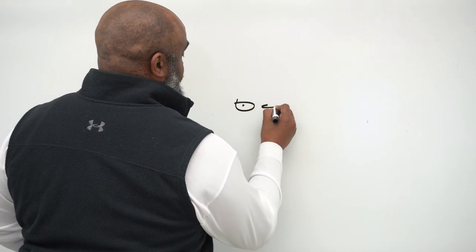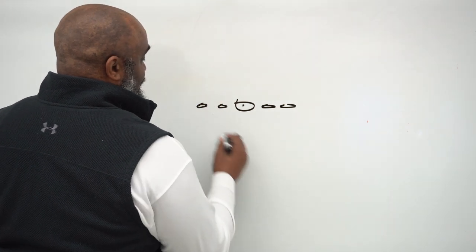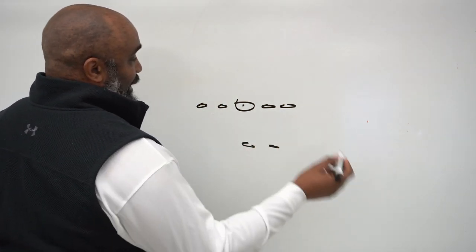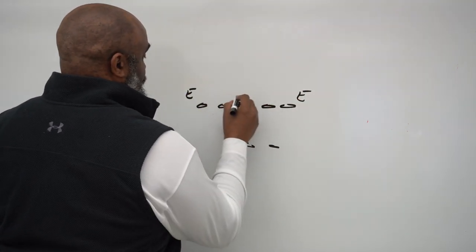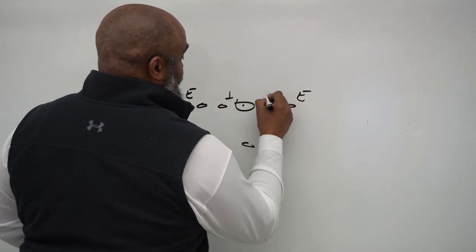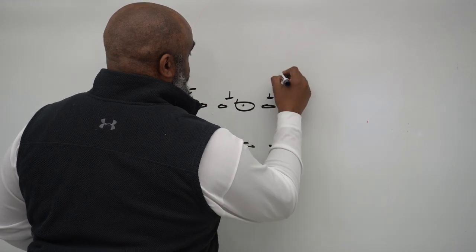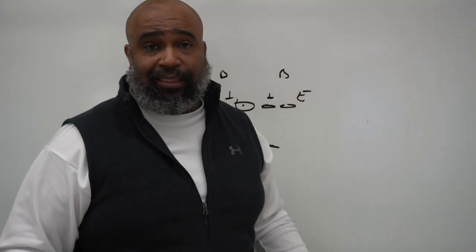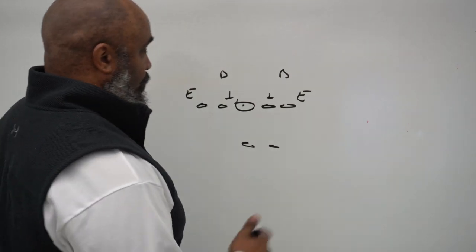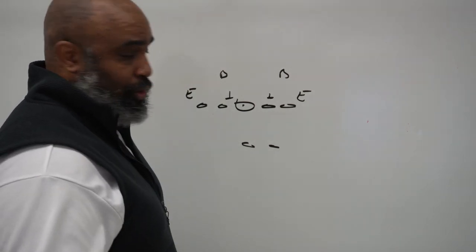We go center, guard, tackle, center, guard, tackle, running back. And let's just say we normally use this even front with a tackle in a three, but two backers for the most part. Because for the most part we stayed in some kind of nickel front.